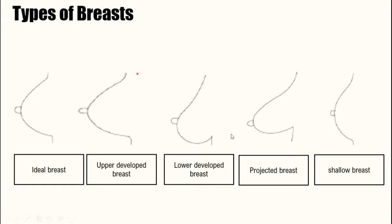Another type is the projected breast. In the projected breast, the breast tissues are large but they cover a very small area of the breast roots — the areas where our breasts are fixed onto our chest. The breasts protrude outwards. The shallow breast is the opposite of the projected breast: the shallow breast spreads over a very large area of the breast roots and does not protrude outwards.